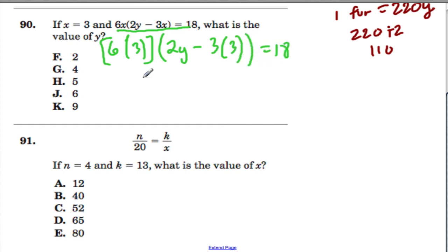Let's deal with these parentheses. 6 times 3 is 18, and then these parentheses, 2y minus 9, and that equals 18. So 18 times 2y is 36y minus 18 times 9, so 9 times 10 is 90 plus 9 times 8 which is 72 is 162, that equals 18.